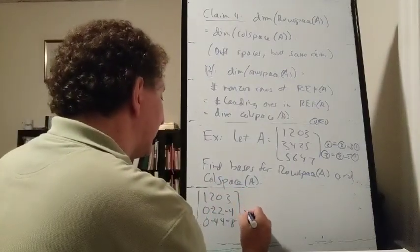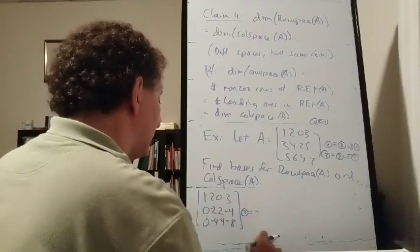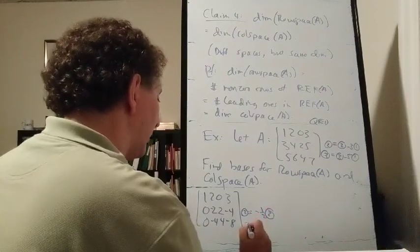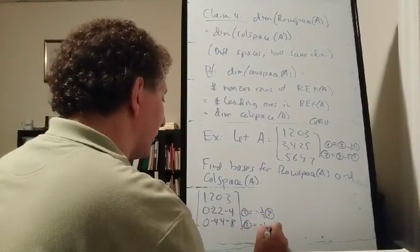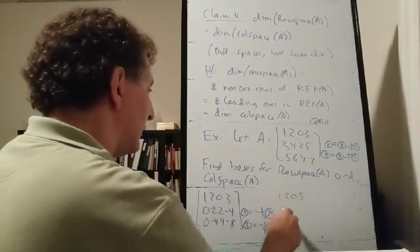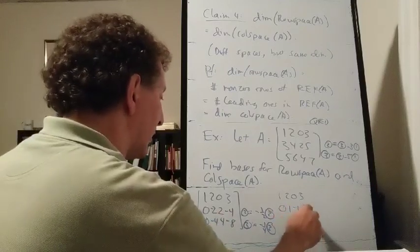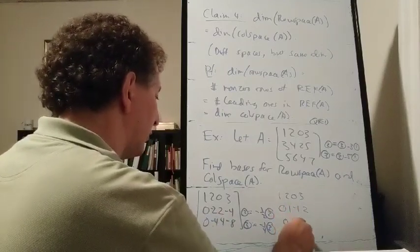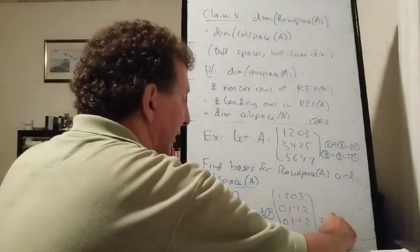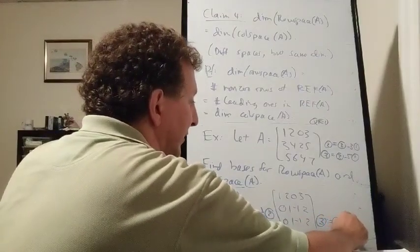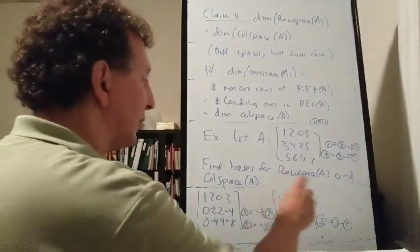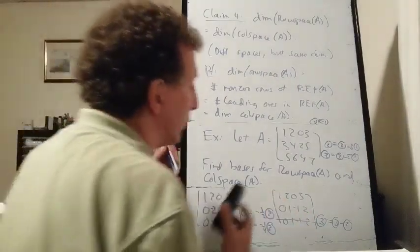Then let row 2 become negative one-half of row 2, and row 3 become negative one-fourth of row 3. We get (1, 2, 0, 3), (0, 1, −1, 2), (0, 1, −1, 2). Then letting row 3 become row 3 minus row 2, those all become zeros. So the basis for the row space is the two vectors (1, 2, 0, 3) and (0, 1, −1, 2).